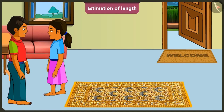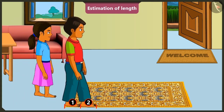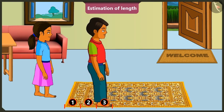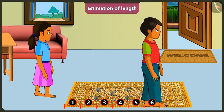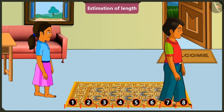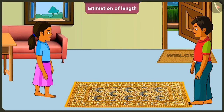Now, let me show you a magic. Magic? Yes, now I will measure this carpet with my feet. One, two, three, four, five, six, seven and eight. Hey! The length of this carpet is only eight feet. Brother, the length of this carpet has been reduced by your magic.